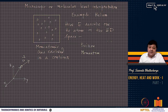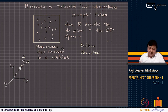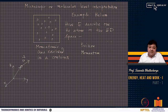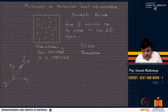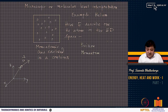In macroscopic thermodynamics, we use properties like pressure, volume, and temperature. For example, we say '1 liter of water' — we do not describe how many molecules are present or how each molecule behaves. That is a macroscopic description of matter, not a molecular one.